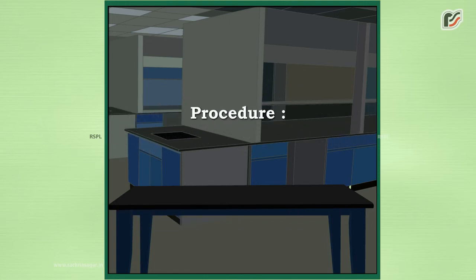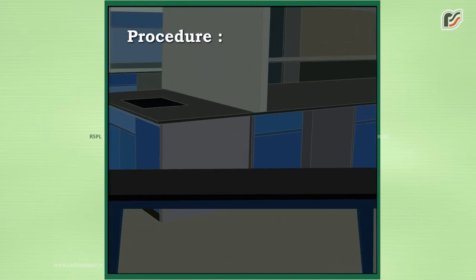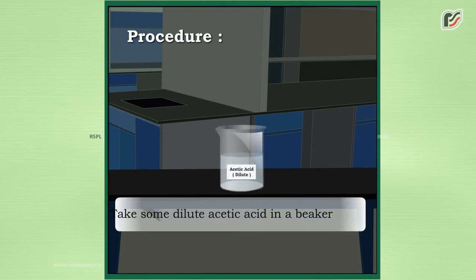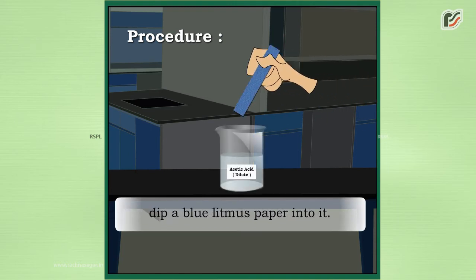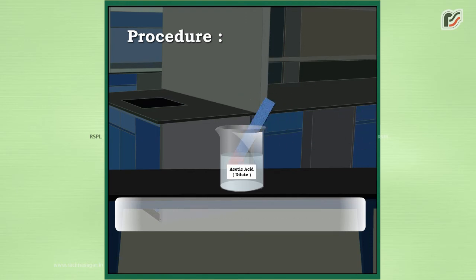Procedure: Take dilute acetic acid in a beaker and dip a blue litmus paper into it. Record your observation.